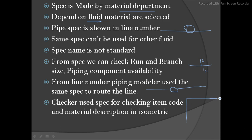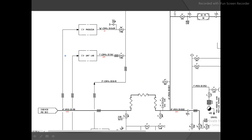Here you can see some P&ID examples. Here you have CDM14 — this is one spec. But here you can see MS12 — this is a different spec, meaning this fluid is different. When the fluid is different, the spec is different, and the material is also different.